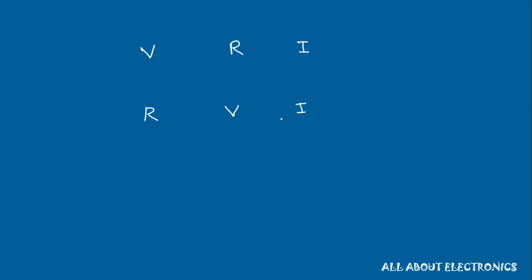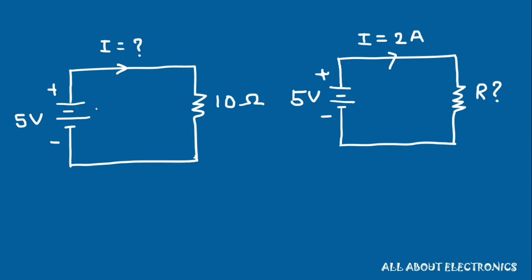Through both examples, we have seen that if we keep voltage constant and increase the value of resistance R, the current reduces. Or if we keep resistance constant and increase or decrease the voltage, the current increases or decreases proportionally. Now let's take a numerical example: we have a 5V source connected to a 10 Ohm resistor. The current I = V/R = 5/10 = 0.5 Ampere.